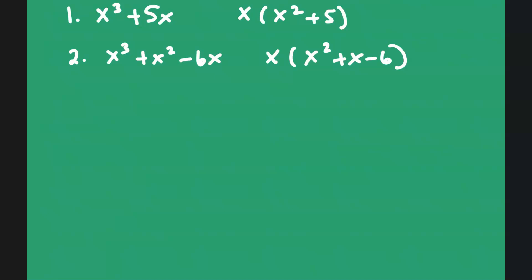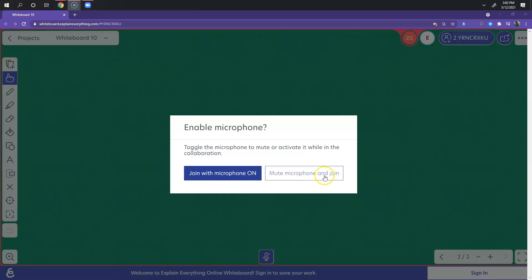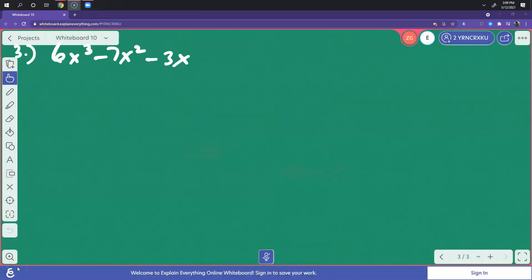You can still factor x squared plus x minus 6 by finding the factors of negative 6. The factors of negative 6 are positive 3 and negative 2. So what you're going to do first is factor the greatest common factor — in this case it's x.